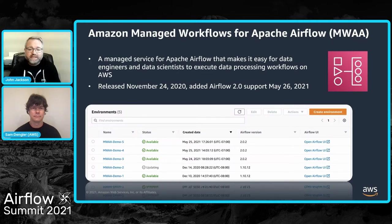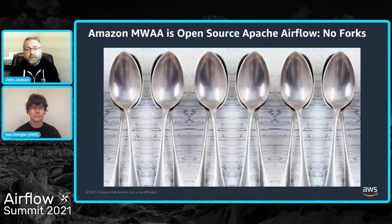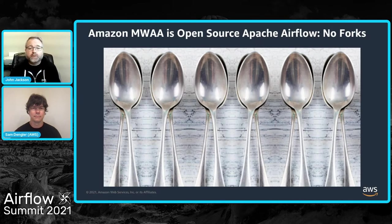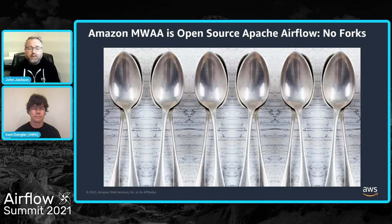When we were deciding what to do, we had to make certain decisions on what we wanted to offer. The first thing, as you can see here, is there are no forks whatsoever. Our top tenant is we're always going to offer the same open source version of Airflow that everyone's using and loving today. Beyond that, we wanted to provide architectural options that gave customers the most flexibility possible.